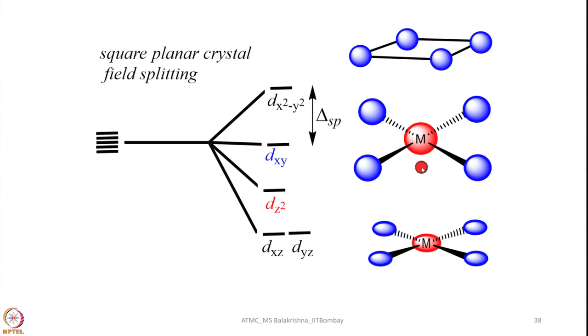As a result what happens any orbital that is oriented in the z direction or in the z associated planes their energy will be low and hence dz square and dxz and dyz have relative lower energy. But on the other hand 4 ligands are coming along the xy plane as a result dx square minus y square will be having higher energy and then dxy has partial overlapping and it has little lower energy compared to dx square minus y square and this is the typical crystal field splitting diagram for square planar complexes here.